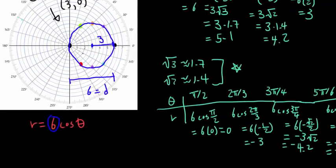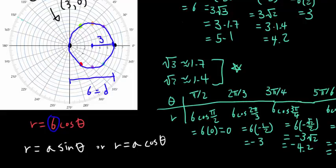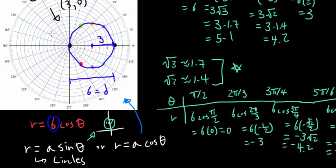In general, if we are graphing a polar equation r equals a times sine of theta, or r equals a times cosine of theta, these are going to be circles. For sine theta, the circle is going to be oriented up or down. For cosine theta, it's going to be to the left or to the right, depending on the value of a.